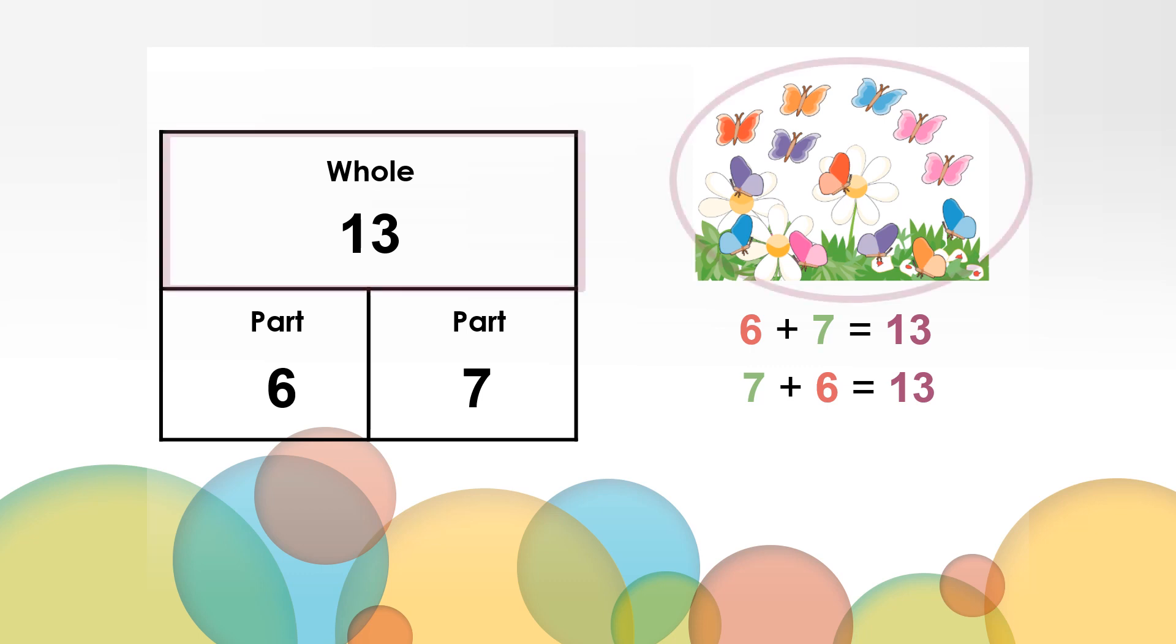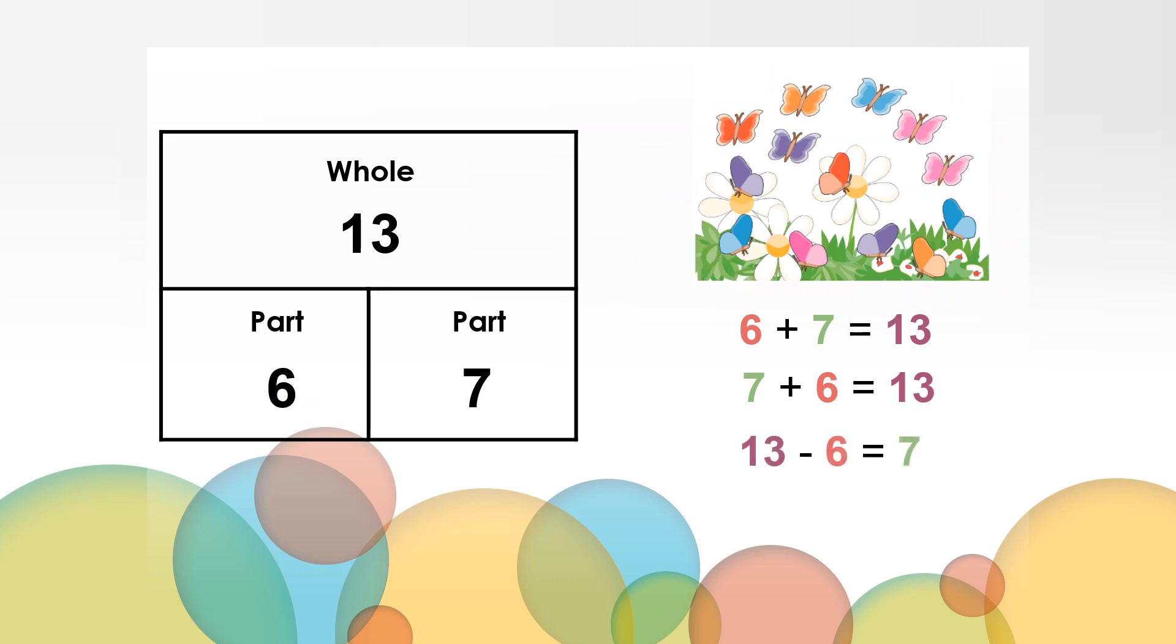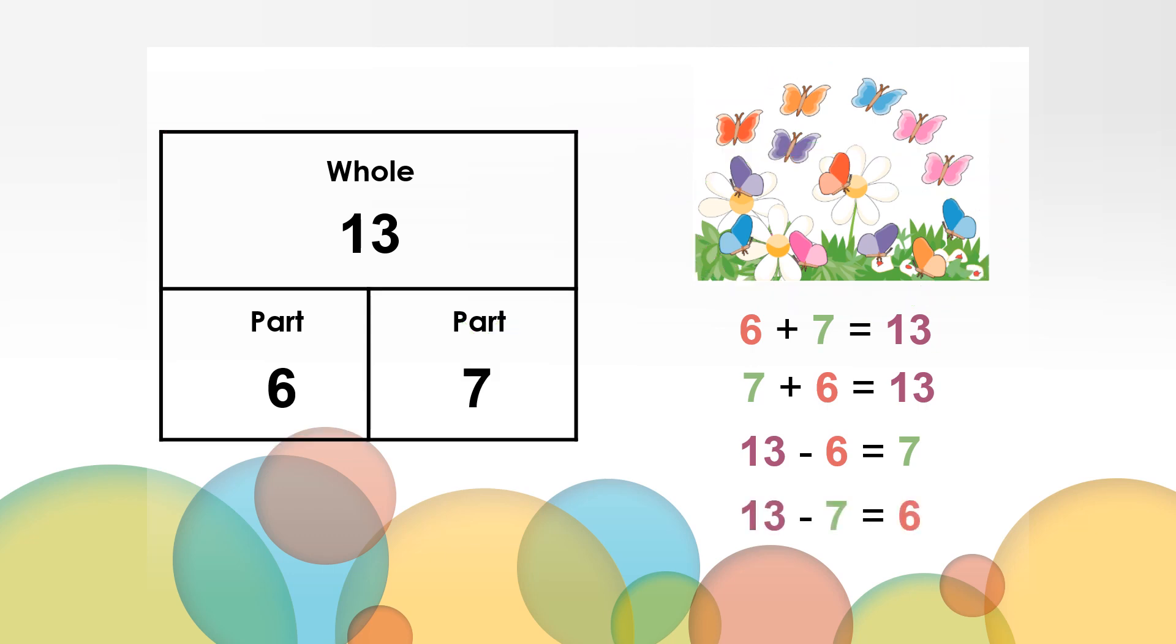But wait a minute, you could have started with the whole or total of 13 butterflies and subtracted the six flying butterflies, which left you with the seven resting butterflies, with a number sentence that reads 13 minus 6 equals 7. Finally, you could have started with the whole or total of 13 butterflies, and subtracted the seven resting butterflies, and had six flying butterflies left, with a matching fact that reads 13 minus 7 equals 6.